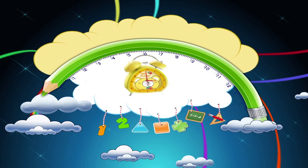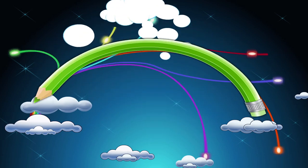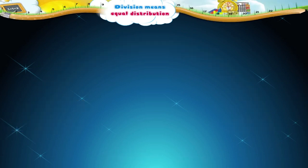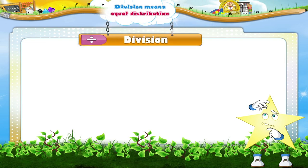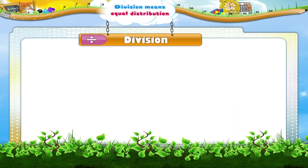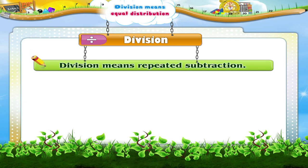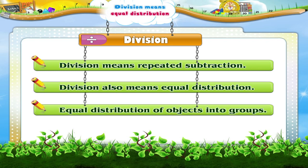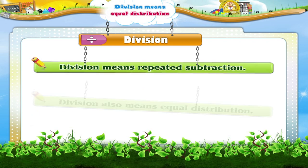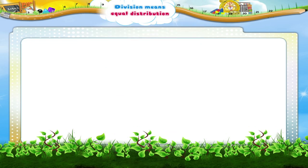Division means equal distribution. Starry, do you remember this sign? Yes, it is division. We have learned that division means repeated subtraction. But Starry, division also means equal distribution — equal distribution of objects into groups. Let us see how.